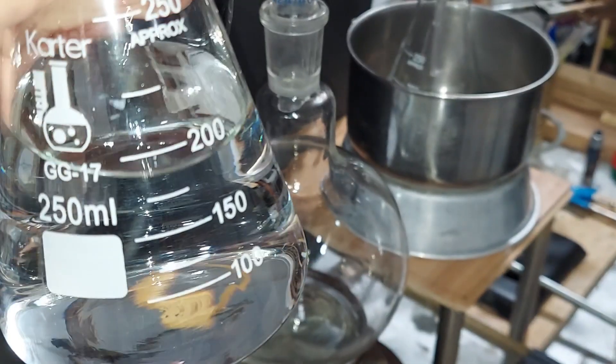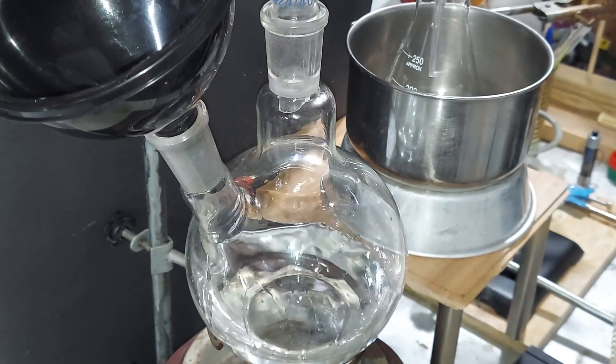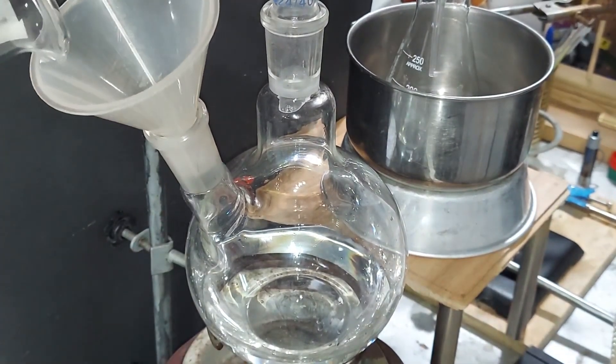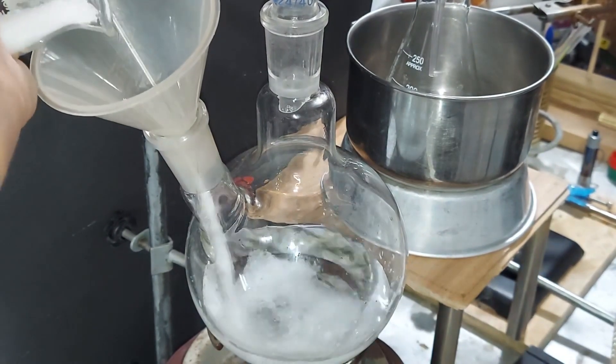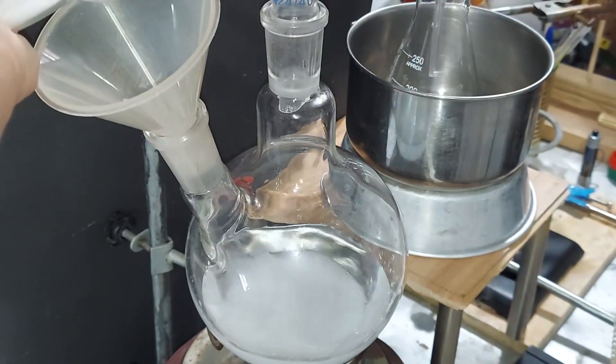Adding 200 milliliters of distilled water. Adding 120 grams of sodium hydroxide. This is going to change the temperature of the water, so I'm going to add it a little bit slowly because it's going to heat up.